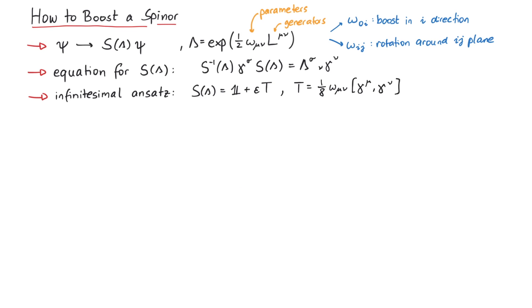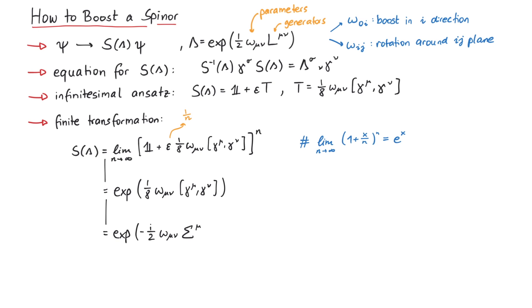If we now apply this infinitesimal ansatz infinitely many times, we get to the finite transformation. Since this looks like the exponential function, the matrix S can also be written using an exponential function. The result is usually written using the matrix sigma, which is given by a commutator of gamma matrices.